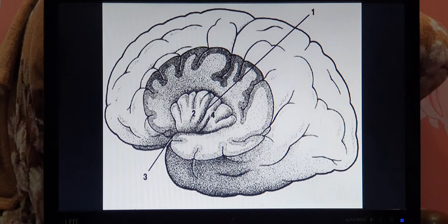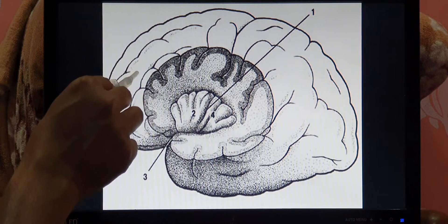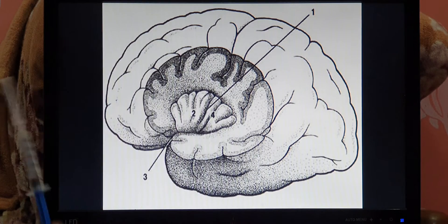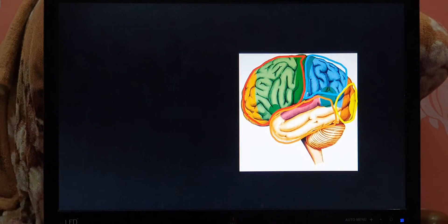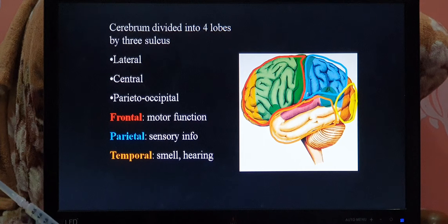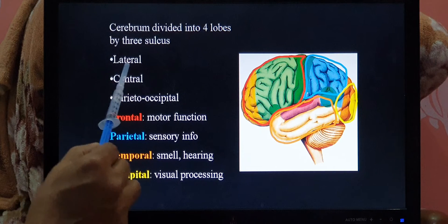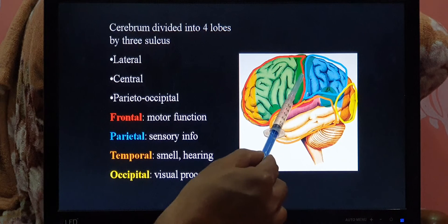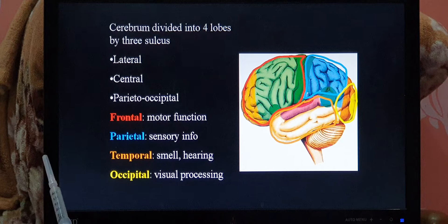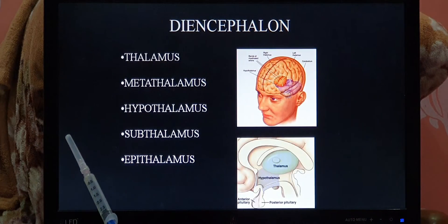The insula is found by identifying the lateral sulcus and retracting it — inside you will find a lobe insulated by the frontal, parietal, and temporal lobes. That insulated lobe is called the insula. Regarding lobe functions: the frontal lobe is mainly for motor functions, the parietal lobe for sensory activities, the temporal lobe for smell and hearing, and the occipital lobe for visual processing.